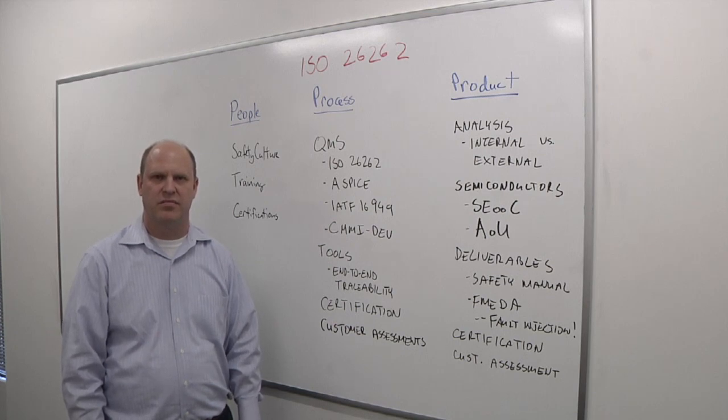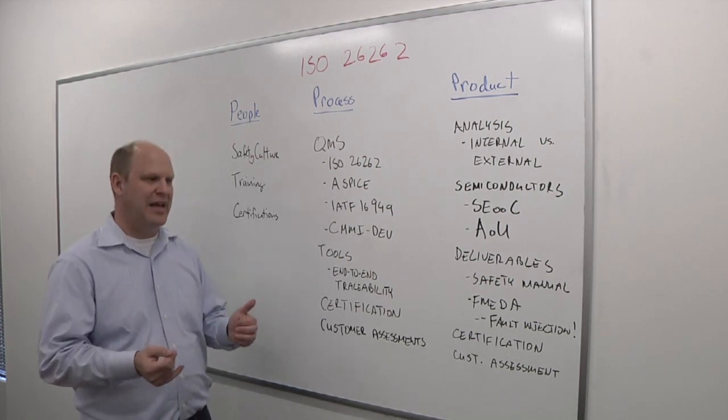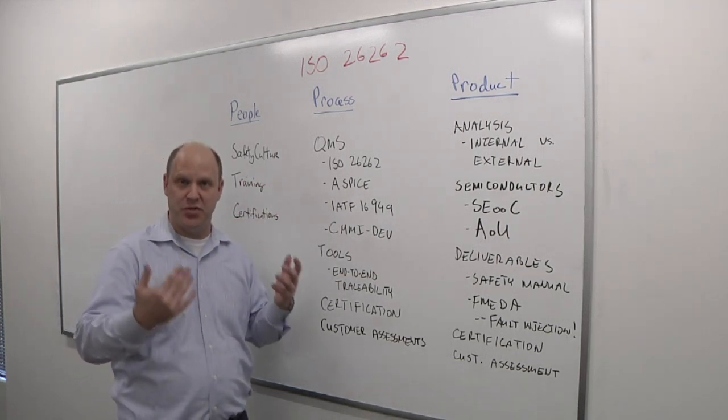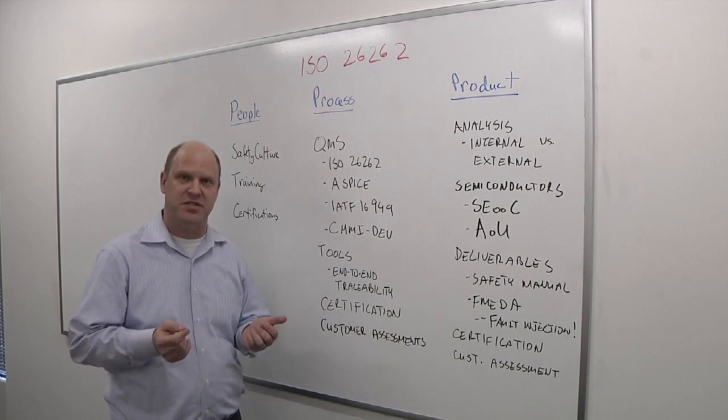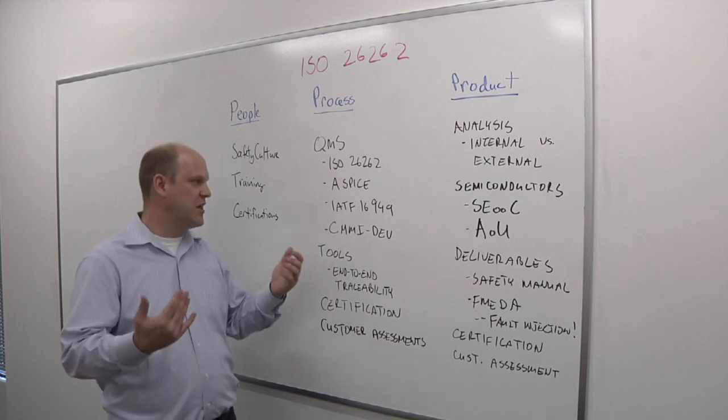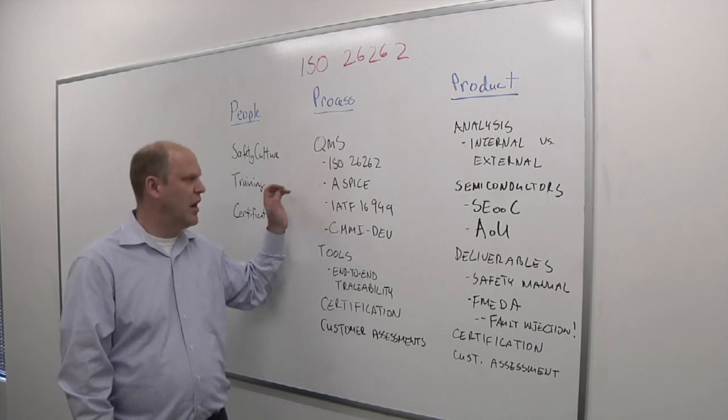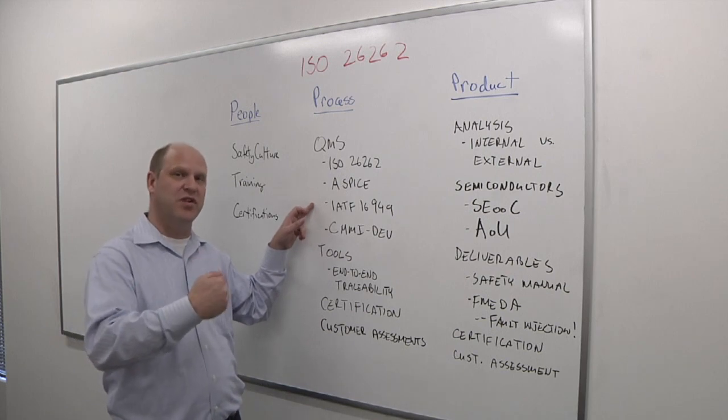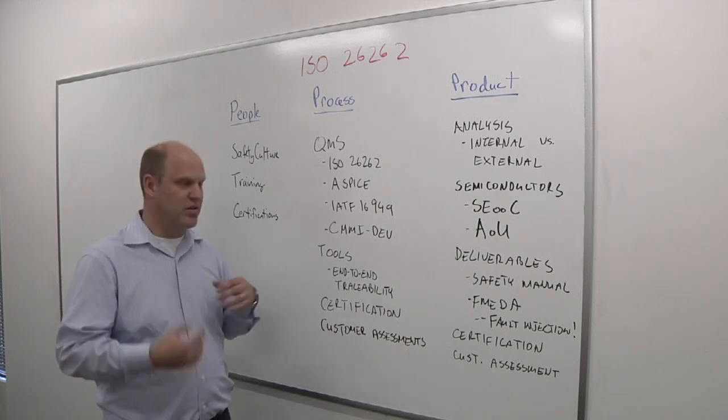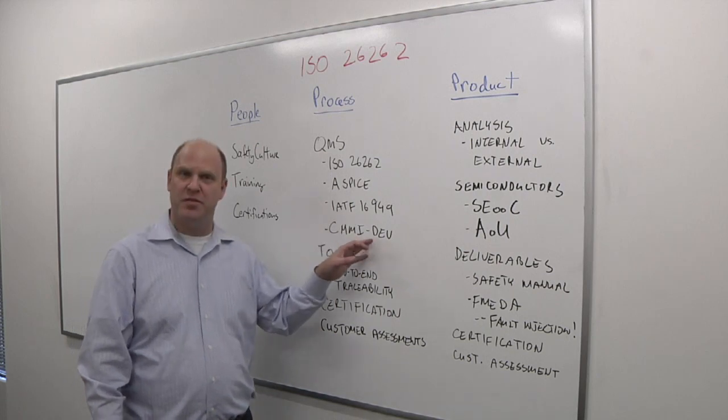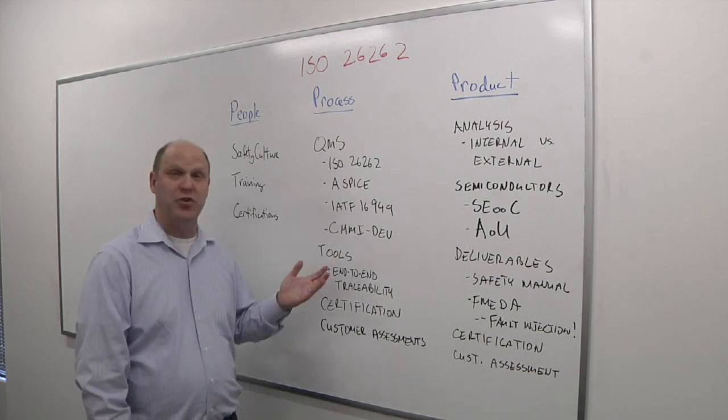Let's roll back into some of the quality management system specs. ISO 26262 doesn't prescribe a quality management system for you. It gives the guidelines, and whatever quality management system you do will have to be compliant with those guidelines. However, there already exist some quality management systems that may help you, like Automotive SPICE on the software side. The tier ones are all very familiar with 16949. In our particular case, we're a semiconductor IP vendor, we do CMMI Dev, which provides more guidance for developing hardware and software.